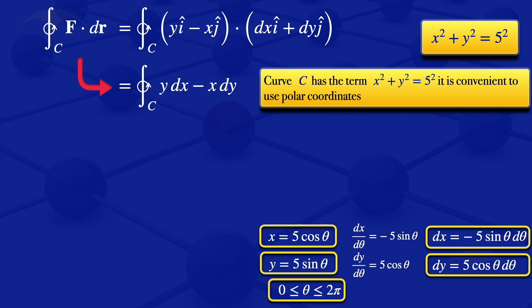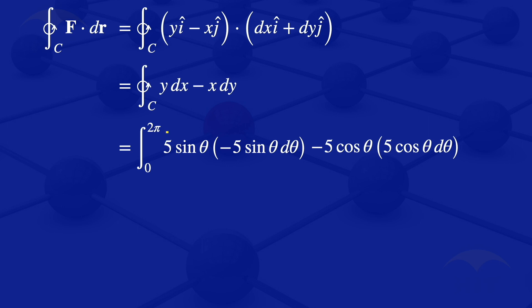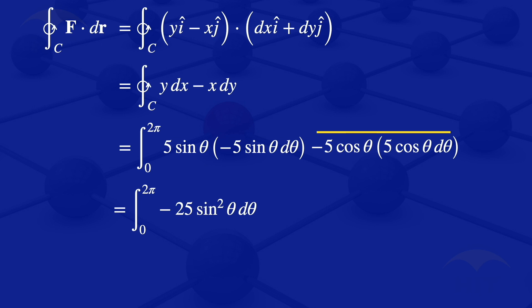We substitute into our integral. For the first part, y dx becomes the integral from 0 to 2π of 5 sine theta times minus 5 sine theta dθ. For the second part, minus x dy simplifies to minus 5 cosine theta times 5 cosine theta dθ. This gives minus 25 sine² theta dθ and minus 25 cosine² theta dθ respectively.